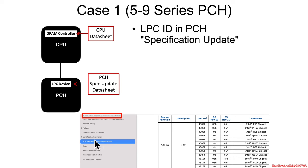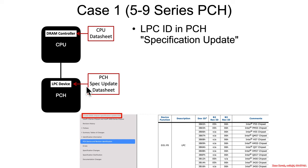Once you use the table, you go back and open the relevant data sheets depending on whether the table tells you that you have a 5 through 9 series PCH. This is usually one of the hardest portions of the class when taught live — getting everyone to figure out the right data sheet. For example, if you look something up and get 3B08, my table would tell you that you've got a 5 series data sheet, and you'd go grab that data sheet and confirm it in the specification update. Spec updates list the IDs on 5 through 9 series data sheets.